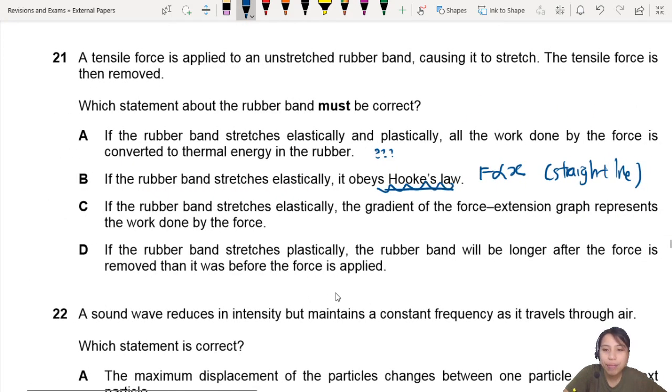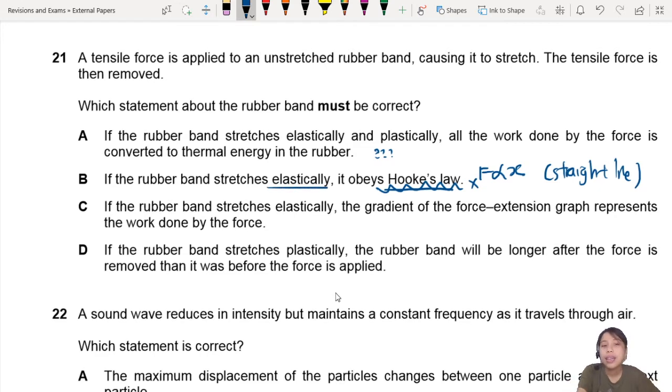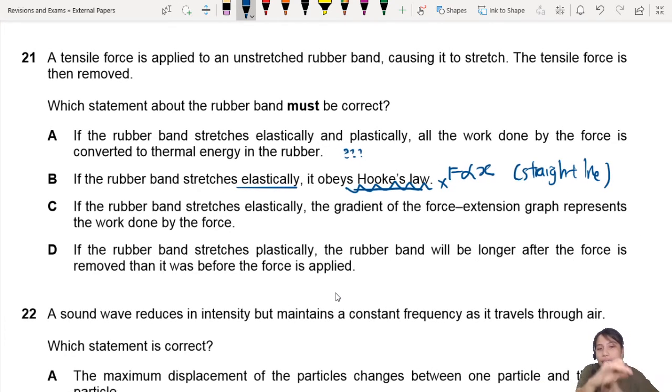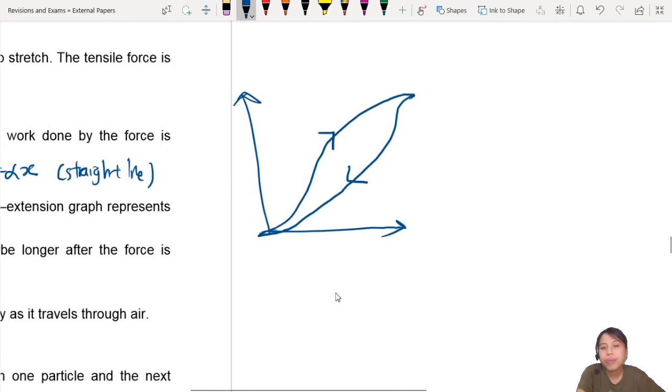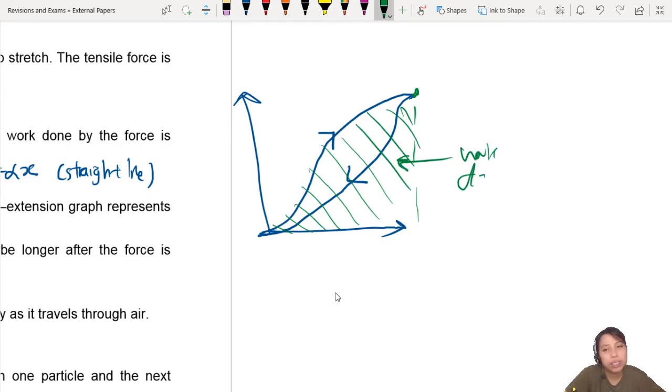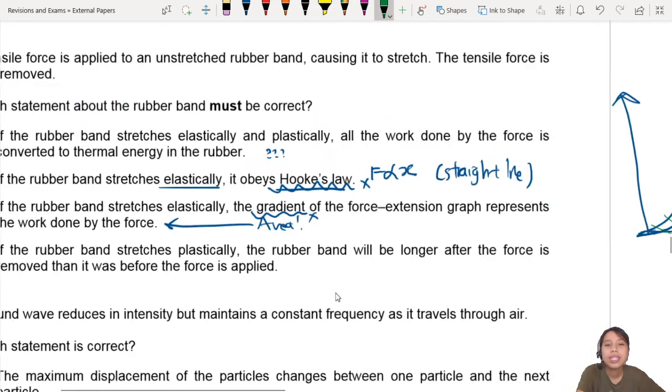Option C: If the rubber band stretches elastically, the gradient of the force-extension graph represents the work done by the force. Excuse me? It should not be gradient. Area is work done by the force. If you're stretching this rubber band to this point, the area here is work done, not the gradient.